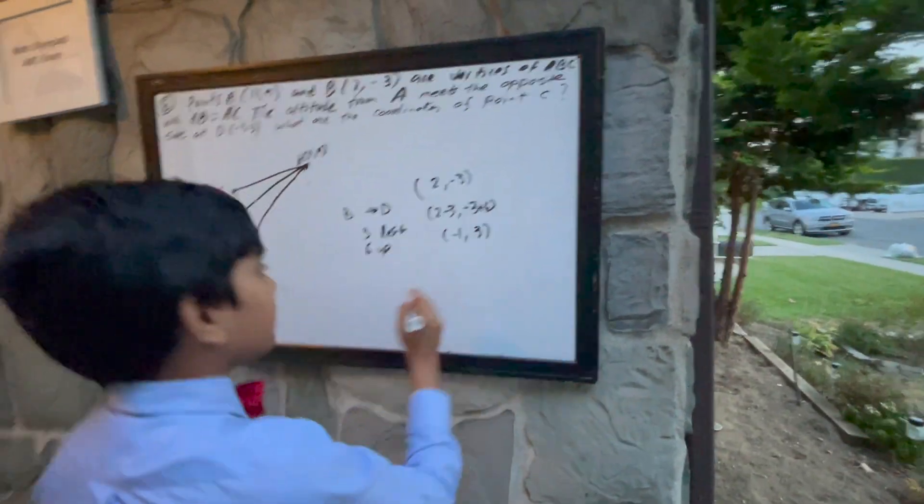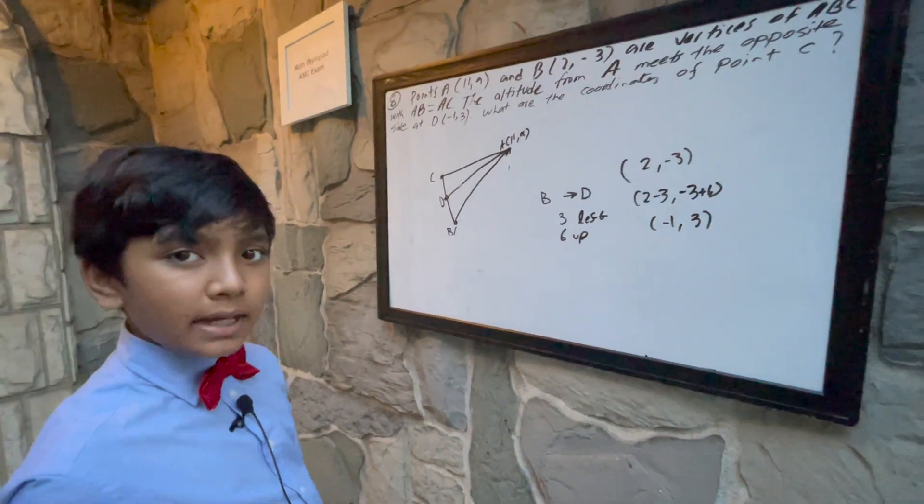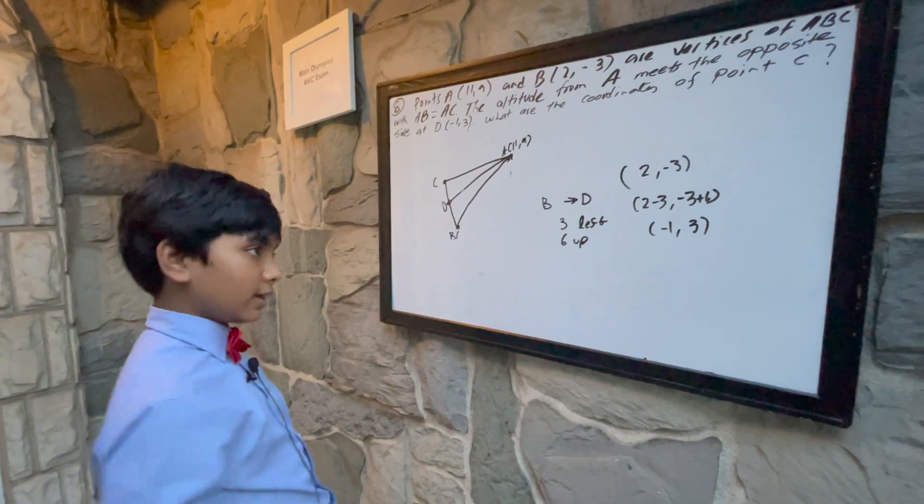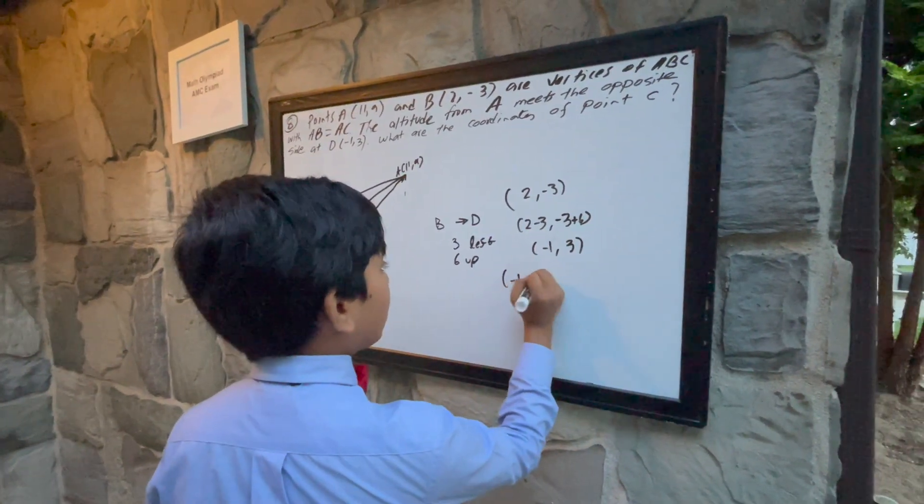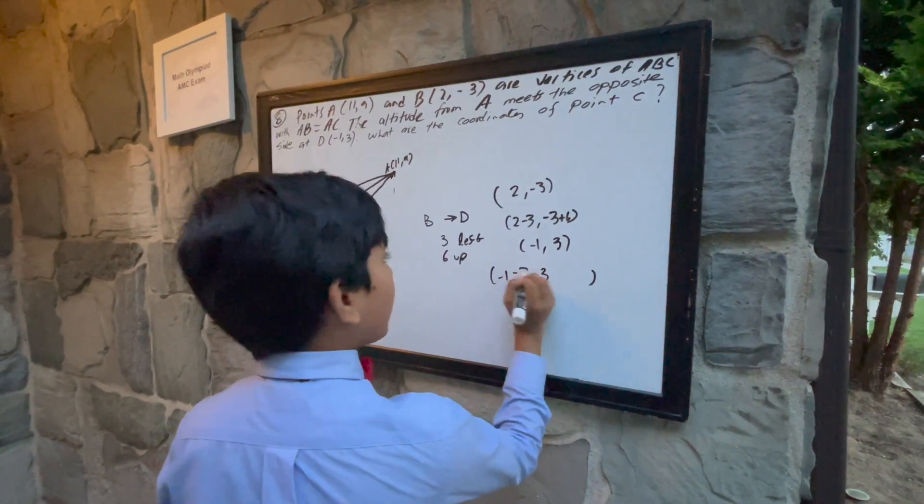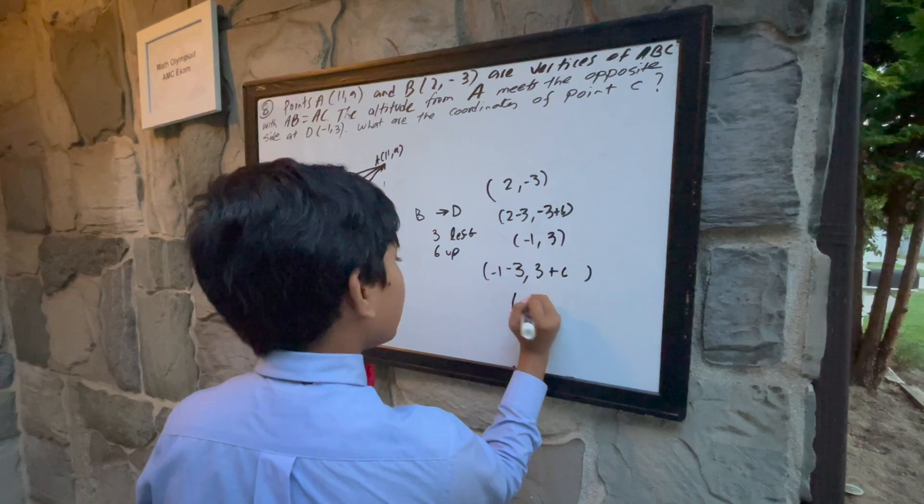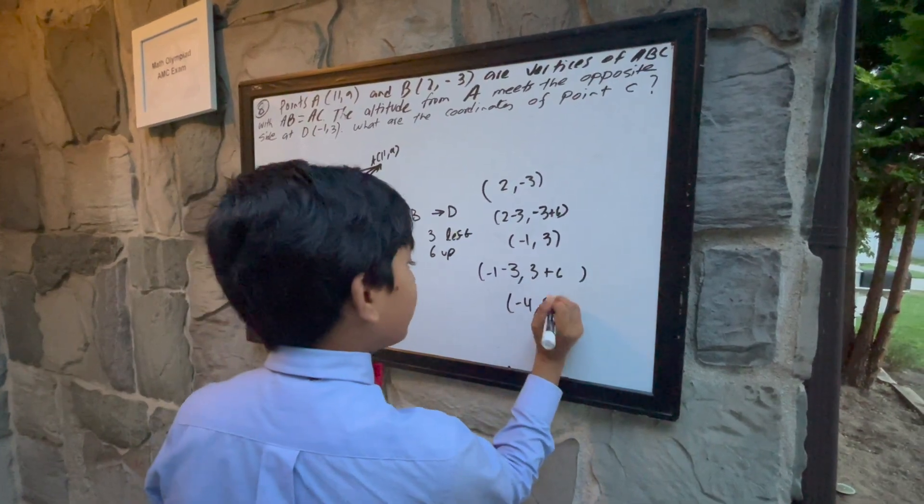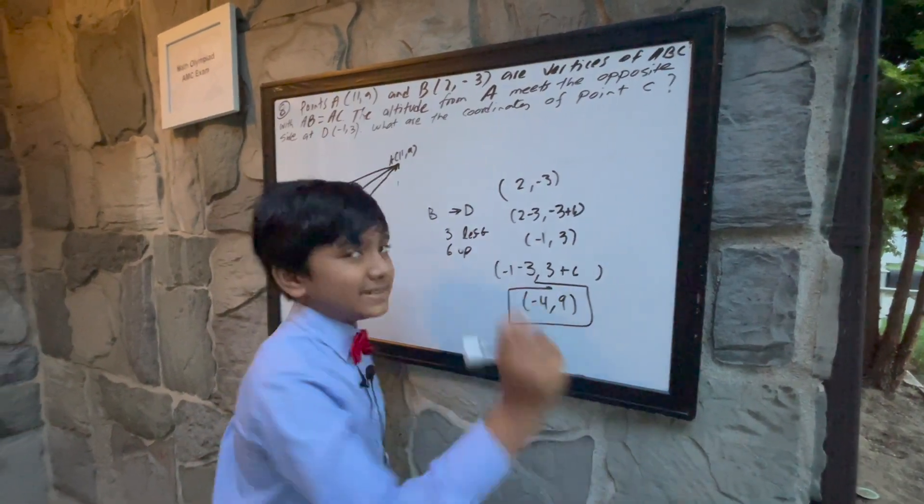That means that we're just going to have to do the same thing to the coordinates of D in order to get C. The coordinates of D are (-1, 3). So now we subtract 3 and add 6, and we get (-4, 9). So that's the answer.